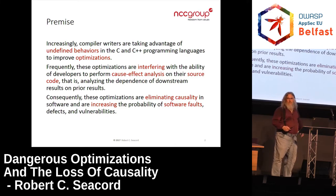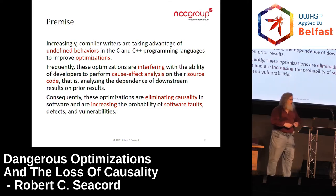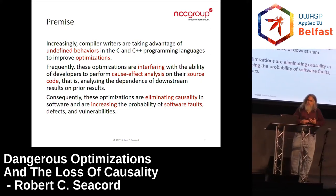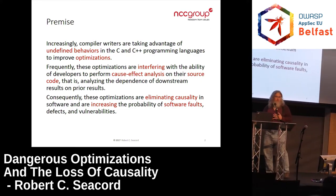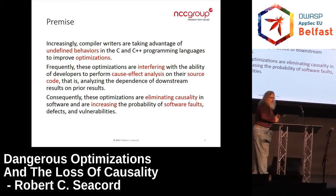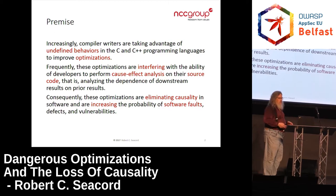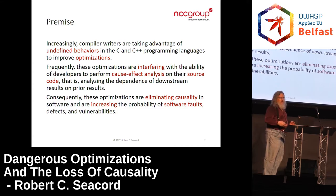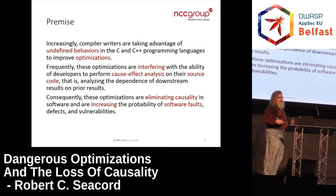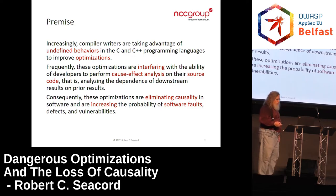I frequently get into discussions where we're saying: if six turns out to be nine, do you care how fast you got that result? And apparently they do. These optimizations tend to interfere with the ability of developers, security analysts, or security tools to analyze the code and determine what it's doing. There's code that looks like it's there and doing something, but it's actually being removed by the compiler. This is leading to increased faults in software, and those are leading to increased vulnerabilities.